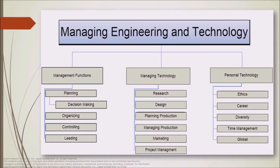Managing Engineering and Technology is divided into three categories: Management Functions, Managing Technology, and Personal Technology. Management Functions is further subgrouped into planning, decision making, organizing, controlling, and leading. Managing Technology is subgrouped into research, design, planning production, managing production, marketing, and project management. Personal Technology is divided into ethics, career, diversity, time management, and global.